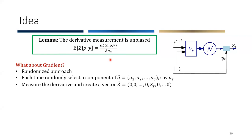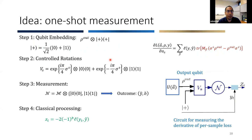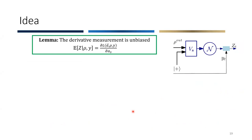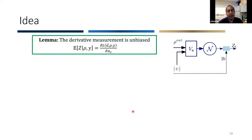Z_t is the output of this measurement procedure. The measurement has two outcomes Ỹ and B; combined with the classical label Y_t, we compute Z_t. It depends on t because the input is ρ_t and Y_t. So we have a random variable whose expectation equals the derivative of the loss. We can think of the whole process as a complicated measurement that gives a random variable whose expectation equals the derivative of the loss with respect to that input, without even looking at the input state.